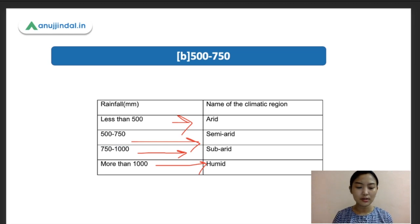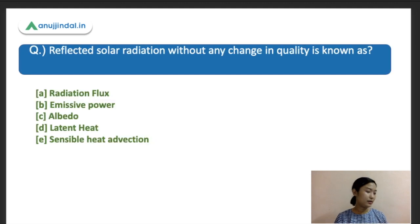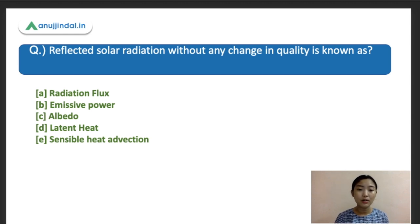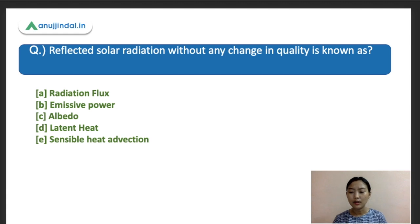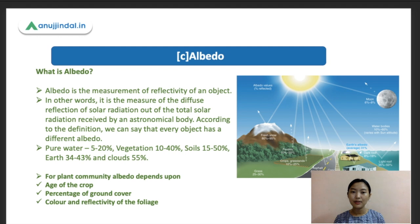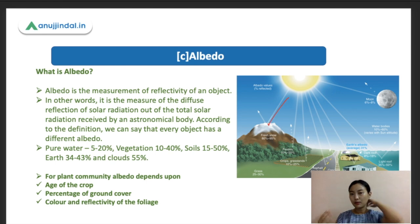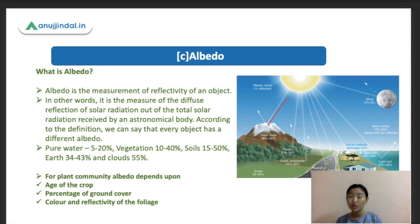Question two: Unreflected solar radiation without any change in quality is known as what? Options are: A) radiation flux, B) emissive power, C) albedo, D) latent heat, E) sensible heat advection. The correct answer is albedo. Albedo is the measurement of the reflectivity of an object — solar radiation enters the earth, some is absorbed, and some is reflected back. Albedo specifically refers to the radiation reflected back without any change in quality.